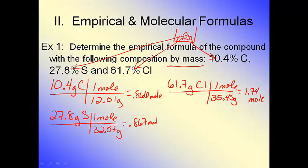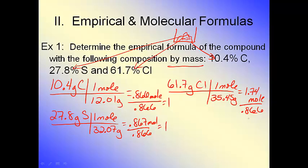Now, are those whole numbers? No, they're not. I can't write carbon 0.866 and sulfur 0.867 in a formula — I need a whole number ratio. A ratio is a comparison, basically division of one value versus another. To get whole numbers, find the smallest value and divide everything by it. Dividing by the smallest — 0.866 — gives 1, 1, and 2. So the empirical formula is CSCl2.